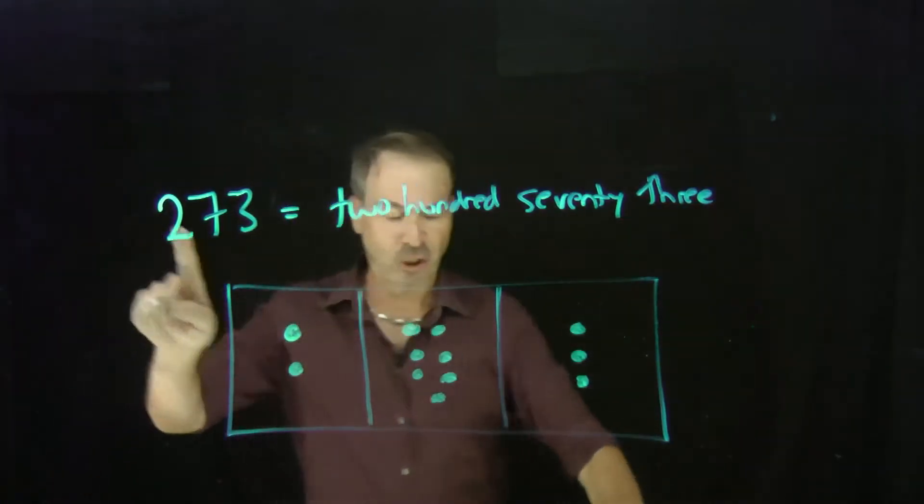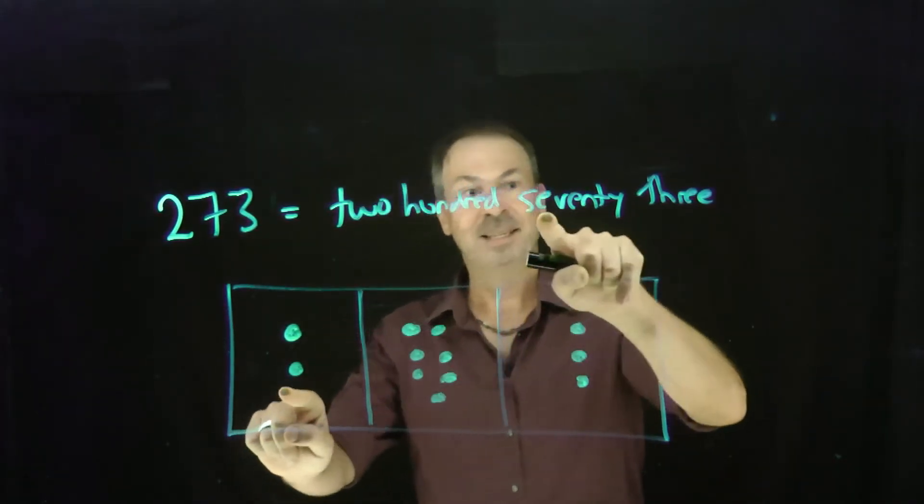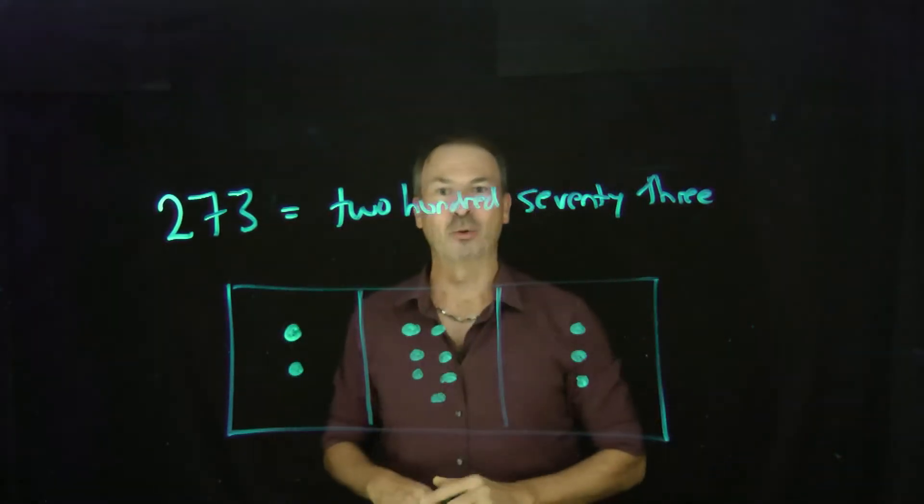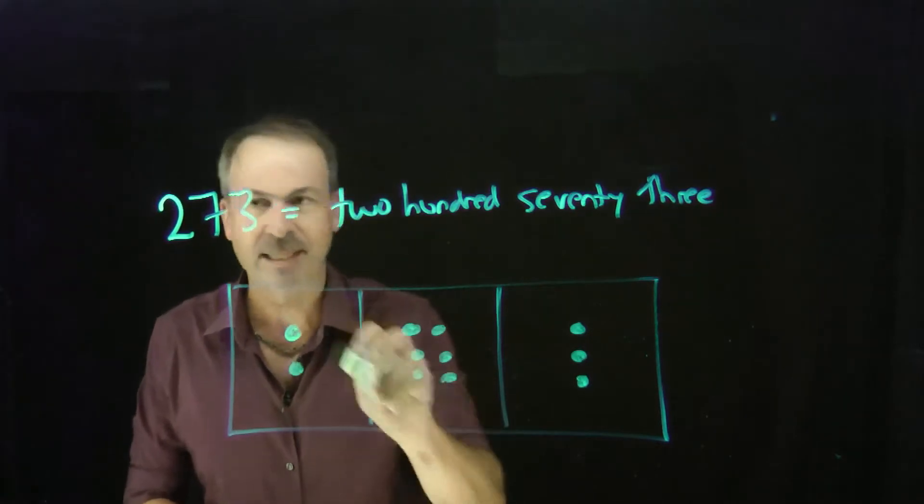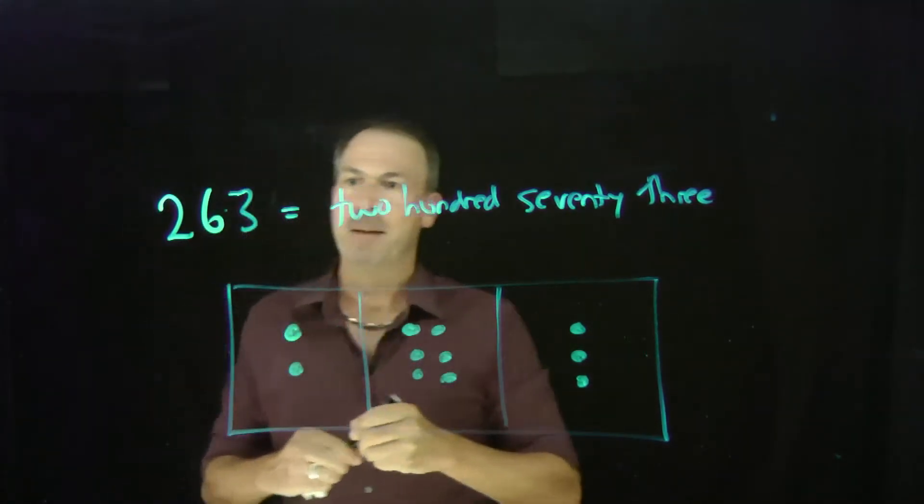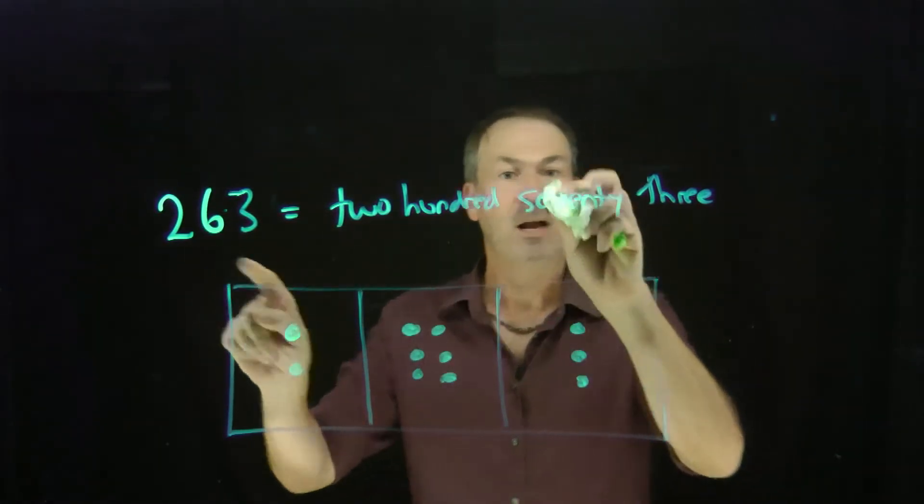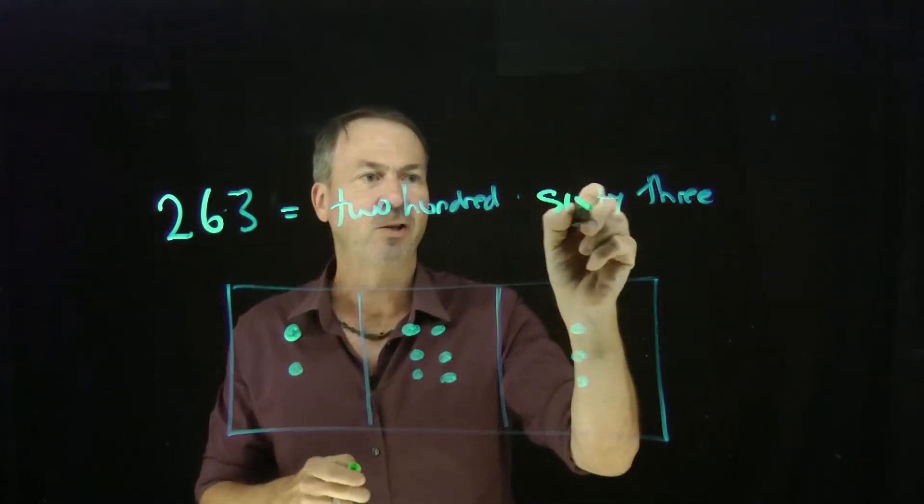For example, here's our good friend 273 and there's nothing weird here. 200, yes, 70, TY is 10, that's fine, and 3. All good and grand. But let me take away one of those tens. Let me make it 6 tens instead. So I'll change this to a 6. What do we write and say for that number? Well, it would basically be the same. It's 200 and this time we say 60. Instead of 70, we now say 60. Nothing weird there. That's fine and good.